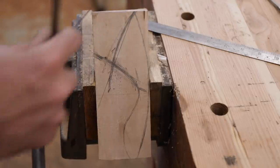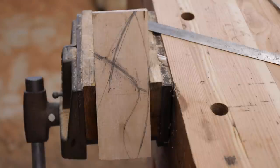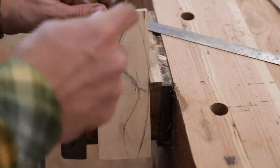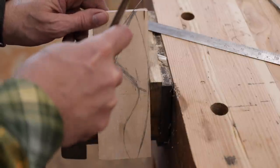So to cut this out, we'll use our coping saw. If you have a jigsaw, bandsaw, that would work better. But if you don't, you need to cut curves and we can use our coping saw.